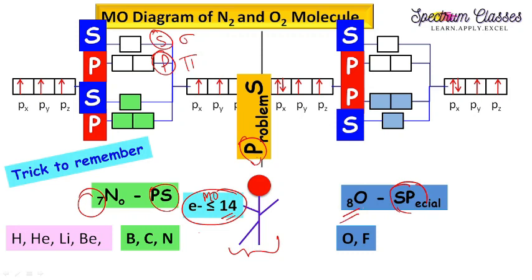If we are having electrons less than equal to 14, then he says no problem. Problem is abbreviated as PS. We are having no problems. PS, and we are talking about the problems initially, so this is the order which it follows.